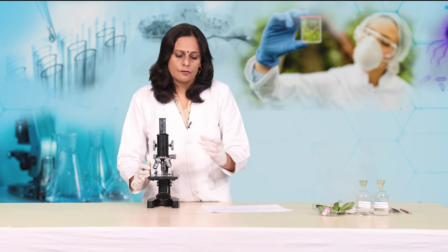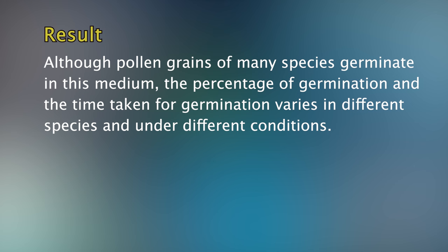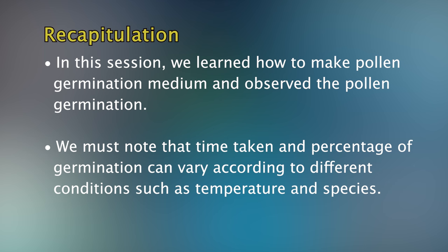We are going to repeat this for the second medium — the 10% sucrose solution. The result of this experiment shows that although pollen grains of many species germinate in this medium, the percentage of germination and the time taken for germination varies in different species and under different conditions. In this session, we learnt how to make pollen germination medium and observed pollen germination. The time taken and percentage of germination can vary according to different conditions such as temperature and species.